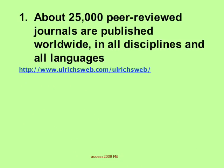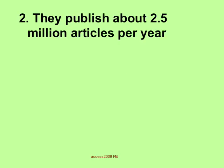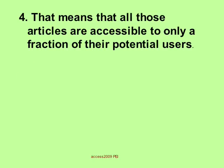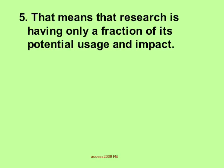About 25,000 peer-reviewed journals are published worldwide in all disciplines and all languages, and they publish about 2.5 million articles per year. Most universities and research institutions can only afford to subscribe to a fraction — a small fraction — of those 25,000 journals. That means all those 2.5 million articles are accessible only to a fraction of their potential users, meaning research is having only a fraction of its potential usage and impact.